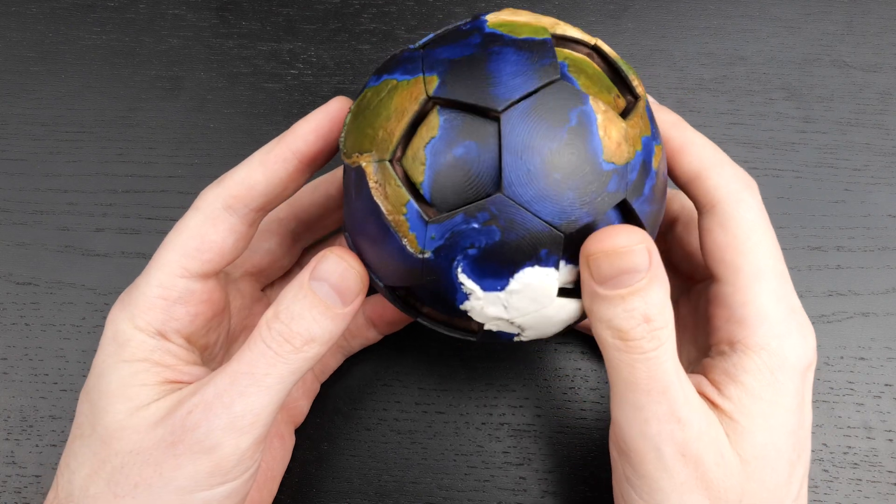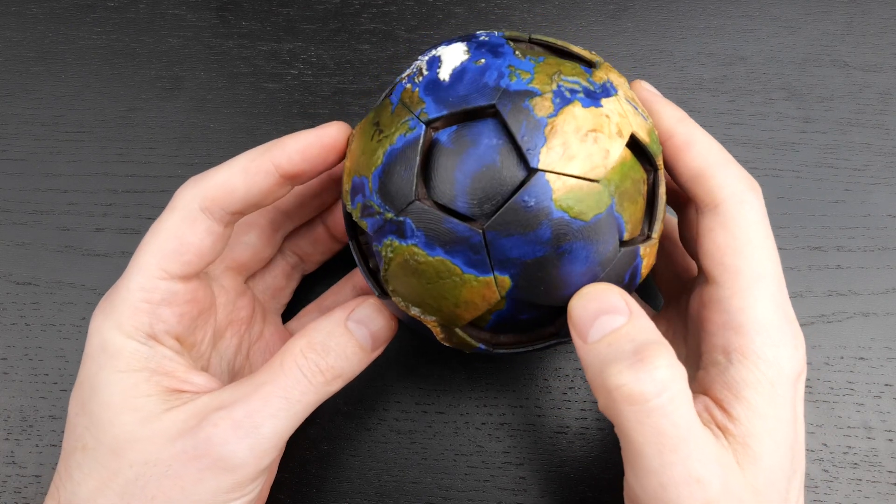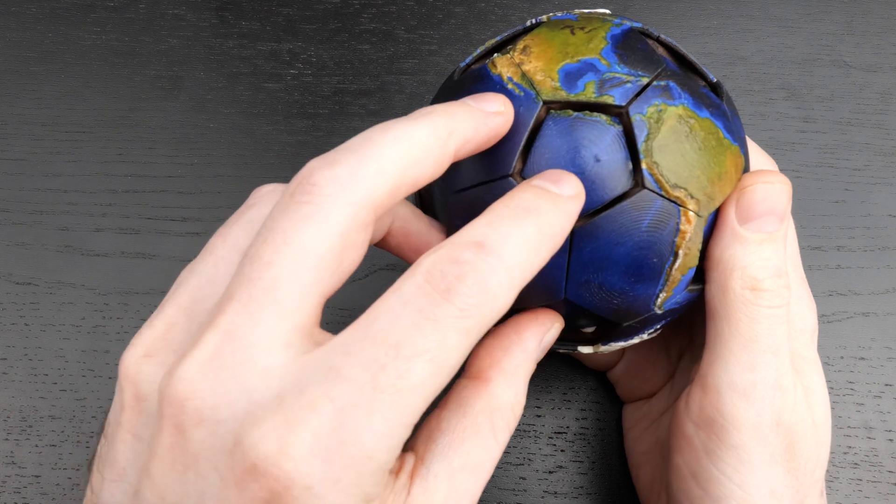It's a globe tiled like a soccer ball with the pentagons recessed in. One of the hexagons, this one in the South Pacific, comes out.